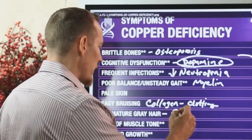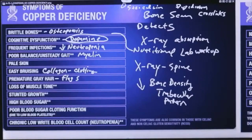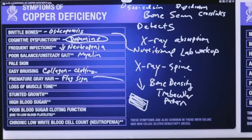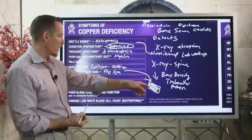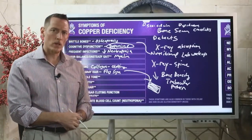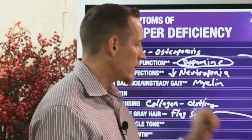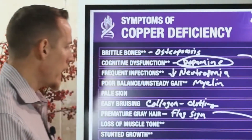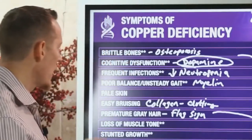Sometimes we see something called a flag sign — on the side of a person's head, you get a patch of hair shaped almost like a square or rectangle, like a flag, that starts to turn white. If you develop that, you could be copper deficient. This same symptom can also be present in vitamin B5 and vitamin B12 deficiency, so it's not specific to copper alone.